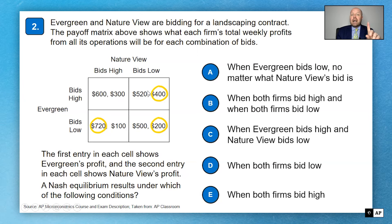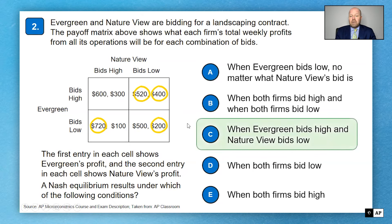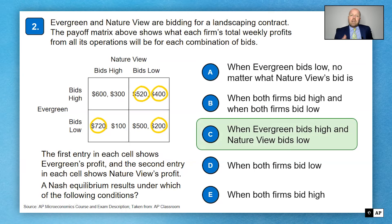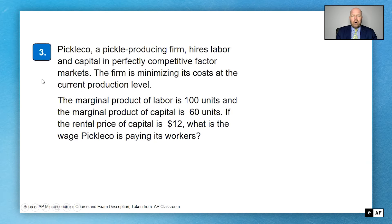Now figure out what Evergreen does. If NatureView bids high, Evergreen gets 600 bidding high or 720 bidding low — clearly low is better. But if NatureView bids low, Evergreen gets 520 bidding high or 500 bidding low, so Evergreen goes high. The Nash equilibrium is Evergreen bids high and NatureView bids low. Use the actual numbers in your justification: 520 is greater than 500, and 400 is greater than 300.